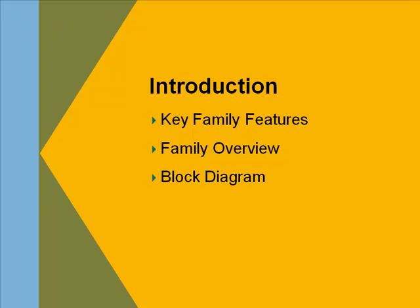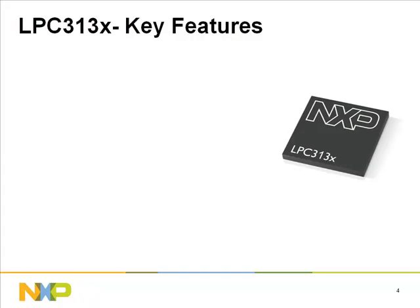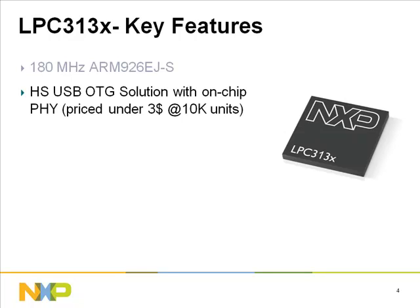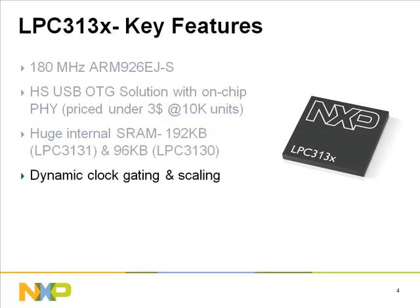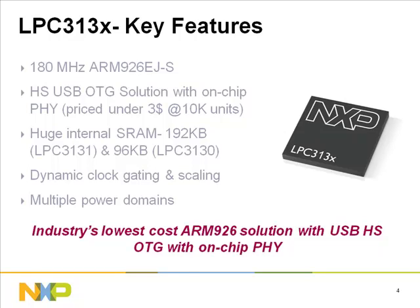Listed are the key features of the LPC 313X: 180 MHz ARM 926EJ-S core, high-speed USB OTG solution with on-chip PHY. The LPC 3130 is priced under $3 at 10k units. The LPC 3131 is equipped with 192 kilobytes of internal SRAM and the LPC 3130 with 96 kilobytes. The chip also features dynamic clock gating and scaling, and multiple power domains.